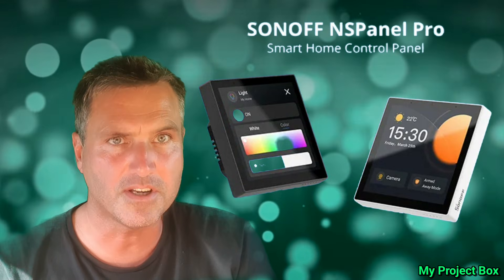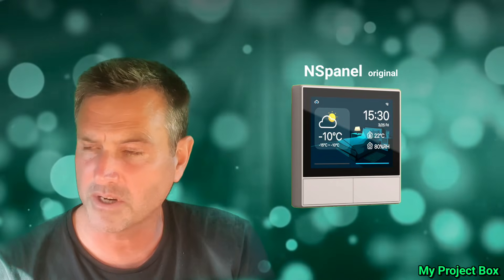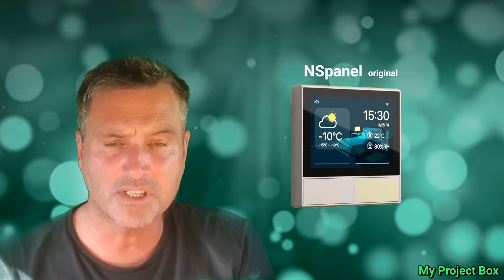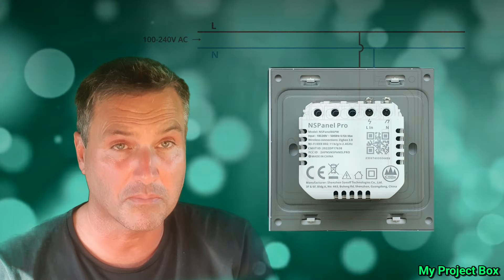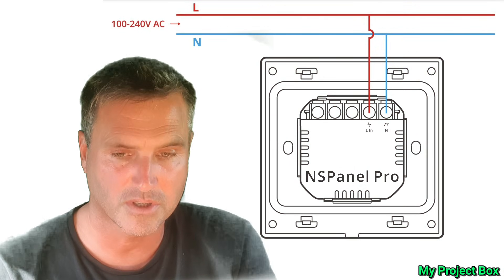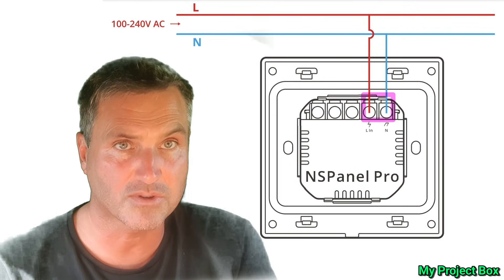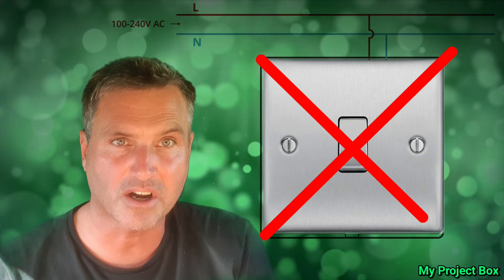But it's very different in some ways to its predecessor, the NSPanel, because the NSPanel had two dedicated light switch buttons, so it could replace a two-gang light switch directly. But the NSPanel Pro does not have any built-in relays, so it doesn't have any outputs. It just gets a live and neutral supply to power it.